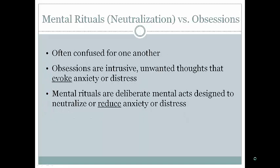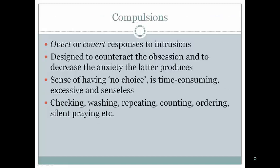Mental neutralizations versus obsessions are often confused. Obsessions are intrusive unwanted thoughts that evoke anxiety or distress. Mental ritualizations are deliberate mental acts performed to neutralize or reduce that anxiety — such as counting to a certain number. Compulsions are overt or covert responses designed to counteract the obsession and decrease anxiety. They feel like there's no choice, are time-consuming, excessive, and senseless. The person may recognize the house isn't on fire yet still check the stove 50 times. Typical compulsions include checking, washing, repeating, counting, ordering, and silent praying.